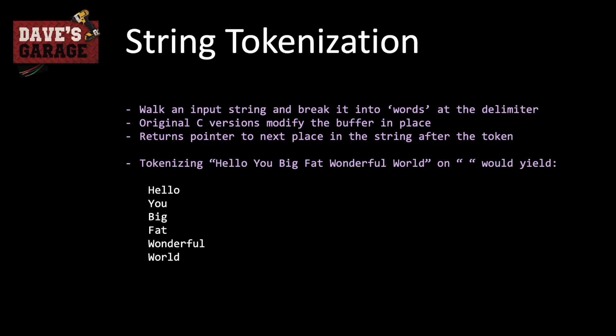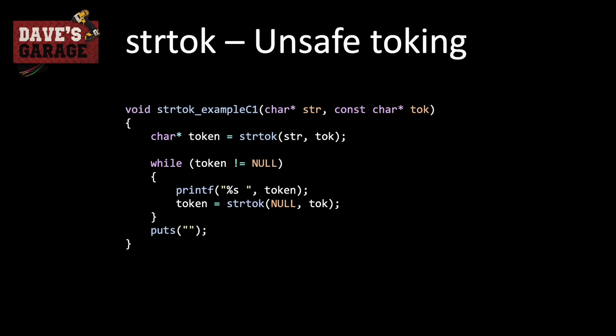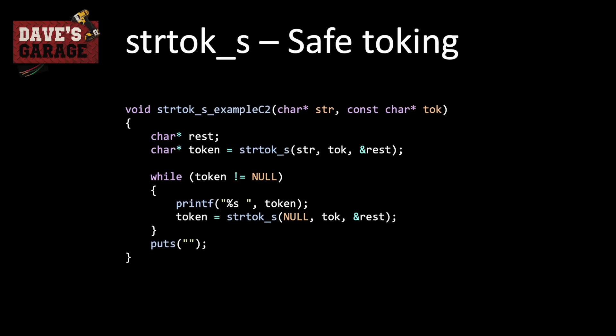String tokenization is a concept many people understand but haven't written code for. It walks an input string and breaks it into words at a delimiter you specify. The original C versions modify your buffer in place and return a pointer to the next place in the string. If you tokenize 'hello you big fat wonderful world' on space, it yields all six words individually. The classic strtok approach has no idea how big your memory is — so by using strtok_s, it provides a 'rest' variable indicating where the rest of the string can be found, letting you continue safely.